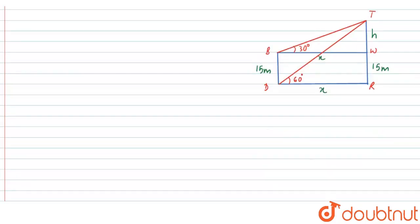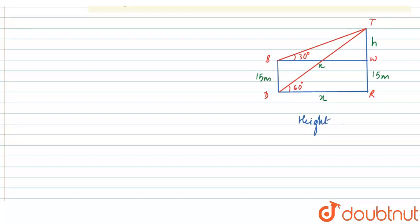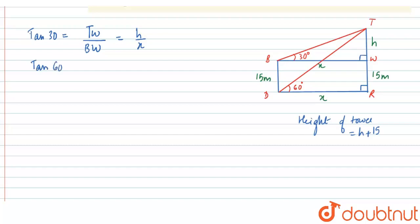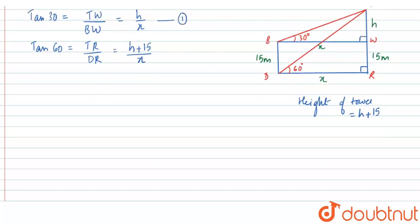The height of the tower is equal to h + 15 meters. Since the tower and building are both perpendicular to the ground, if we take tan 30, tan 30 = TW / BW = h / x. And tan 60 = TR / DR = (h + 15) / x. We will name these as equation 1 and equation 2.